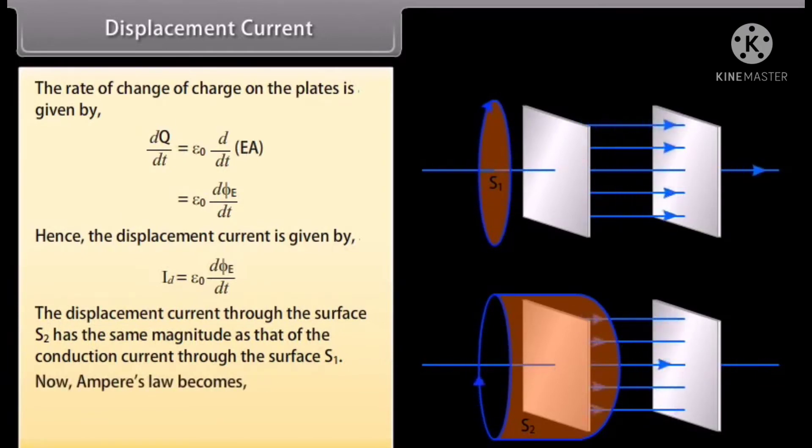Hence the displacement current is given by I_D is equal to epsilon_0 D phi_E by DT. The displacement current through the surface S2 has the same magnitude as that of the conduction current through the surface S1. Now Ampere's law becomes closed integral of B dot DL is equal to mu_0 multiplied by I plus epsilon_0 D phi_E by DT.